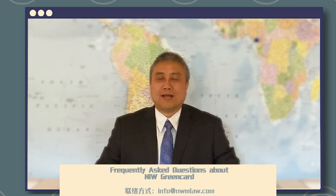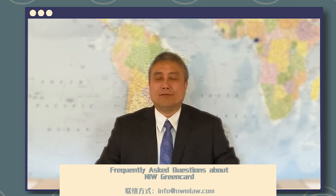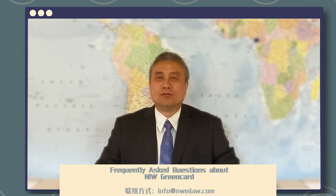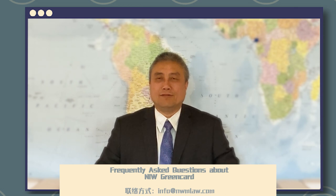How long may it take from start to receiving my green card? If you go through NIW, it's case by case, but if you are already inside the U.S., it may take anywhere from one year to one and a half years to receive your green card. If you are outside of the U.S., it may take a little longer — say, one and a half to two years from start to receiving your green card. That assumes there is no delay on your side.